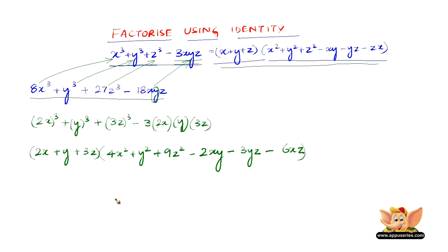Therefore, (2x + y + 3z)(4x² + y² + 9z² - 2xy - 3yz - 6xz) is the factorized form of 8x³ + y³ + 27z³ - 18xyz.